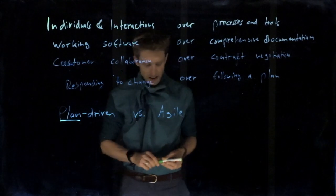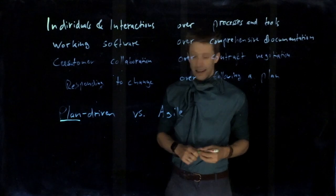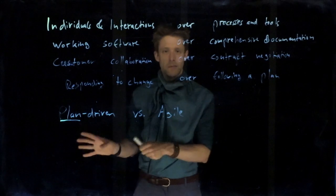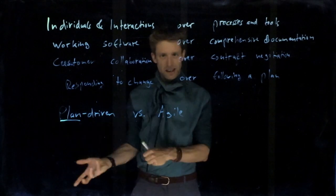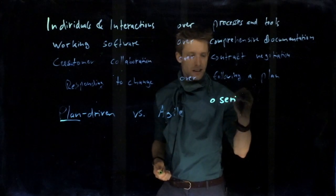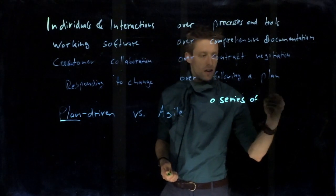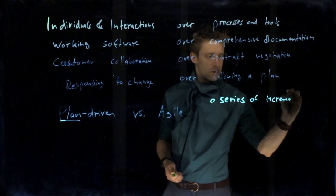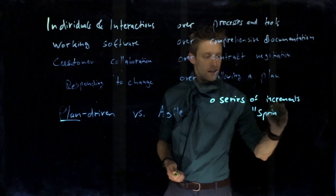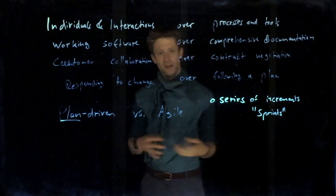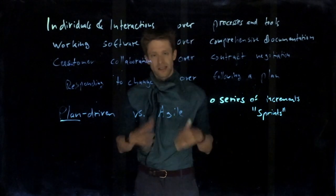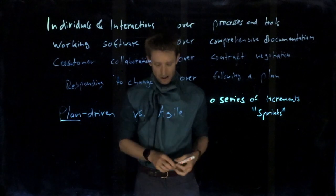Agile development is an incremental process. Specification, design, and implementation are intertwined, as we discussed earlier. What you have is typically a series of increments that are very often called sprints. In many of the agile processes, they are called sprints, and they can take everything from a day to a couple of weeks typically, but we're not talking about months or years. They are fairly short on purpose.